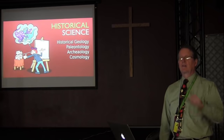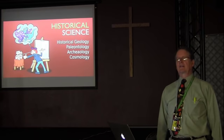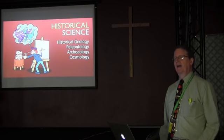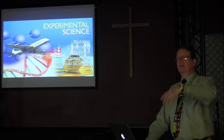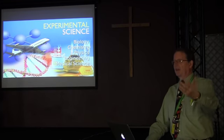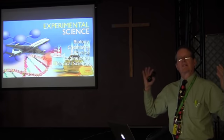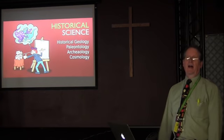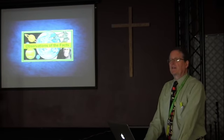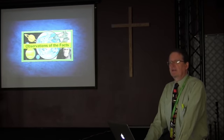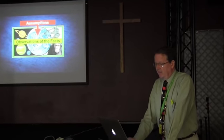Most people today, including most evolutionists and most evolutionary scientists, either are confused about these two kinds of science or deny that there's any difference between them. They see the results of experimental science — all the technology, the cell phones and computers — and say science can do what it says it does. But no: in order to reconstruct the past, you have to make assumptions. Assumptions affect what you see, and they affect how you interpret what you see to reconstruct the past.